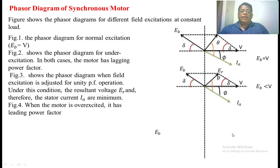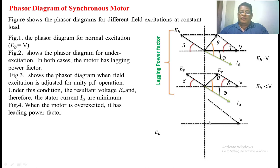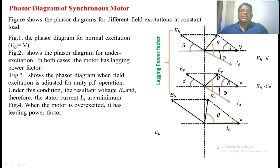In the third case, we adjust the field current by increasing Eb such that IA falls in phase with V — that is unity power factor. The resultant vector Er is found from V and Eb. Now IA is in phase with V, so the angle between V and IA is zero degrees — unity power factor.